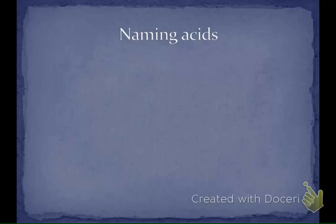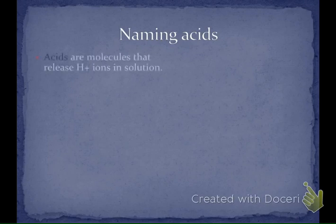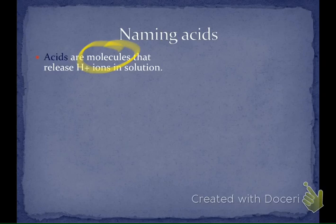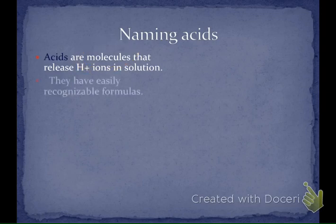Welcome to day in review number two of 2015. Let's go over what we talked about in class really quickly. Today we talked about naming acids. Acids are molecules that release hydrogen ions in solution. Since acids are molecules, molecular substances are also covalent — two nonmetals — versus ionic substances, which are a metal and a nonmetal. Acids have easily recognizable formulas.